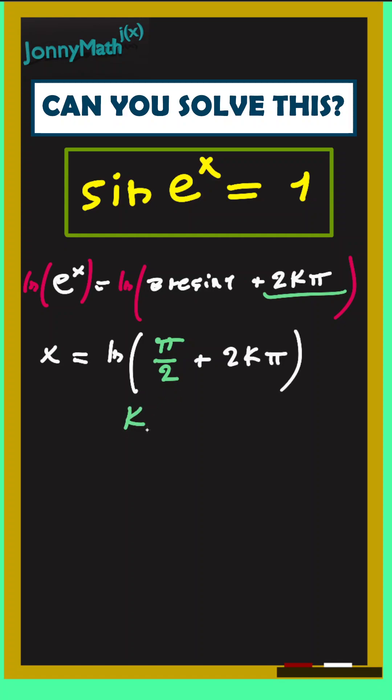Now we know that k has to be an integer and also that the argument of the natural log has to be greater than 0.